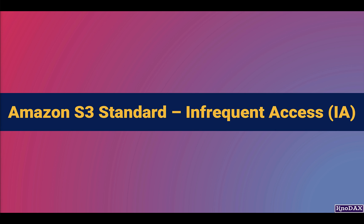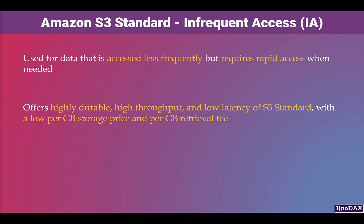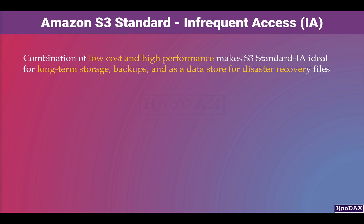Amazon S3 Standard Infrequent Access is for data that is accessed less frequently but requires rapid access when needed. It offers highly durable, high throughput, and low latency storage with a low per-GB storage price and per-GB retrieval fee, and provides 99.99% availability. This combination of low cost and high performance makes it ideal for long-term storage, backups, and as a data store for disaster recovery files. However, it is more expensive than S3 One Zone Infrequent Access for secondary backup copies.